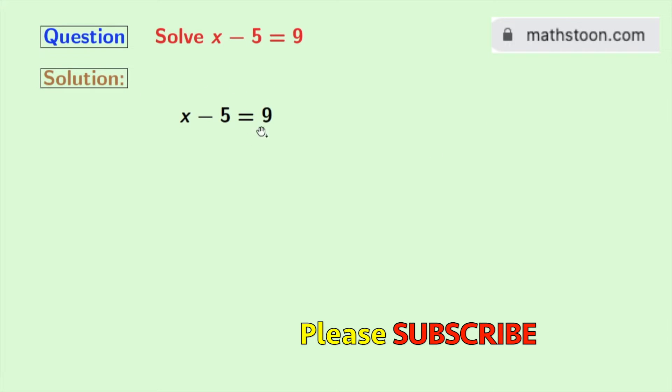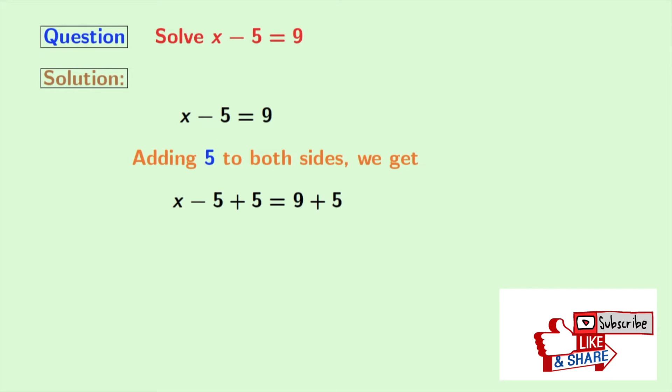This is our given equation. Now to get the value of x, we will add 5 to both sides. Doing so, we get x minus 5 plus 5 equals 9 plus 5.